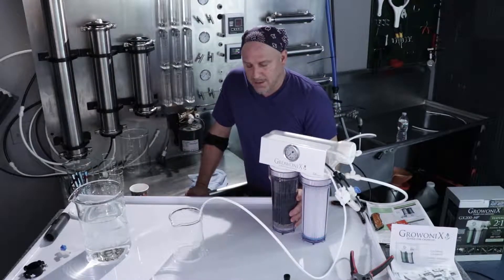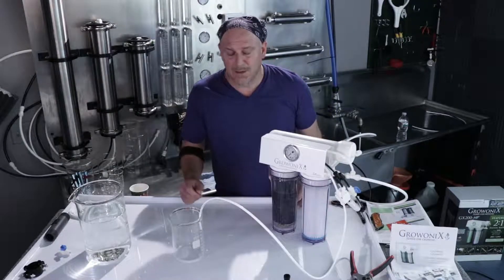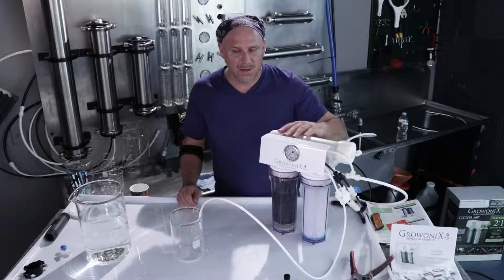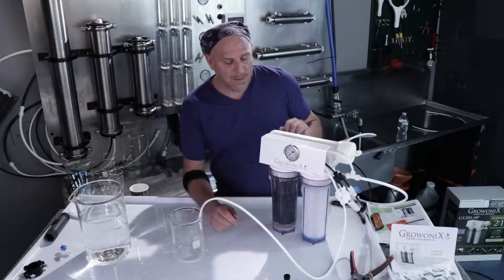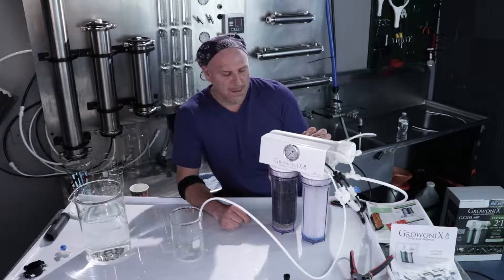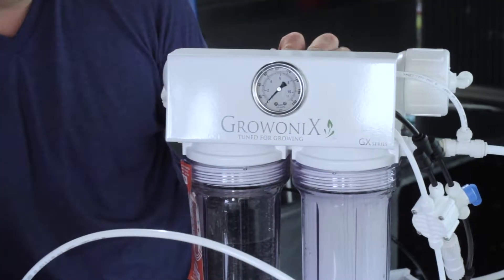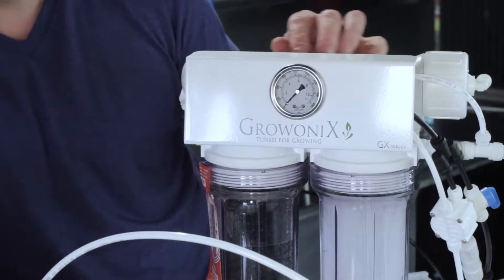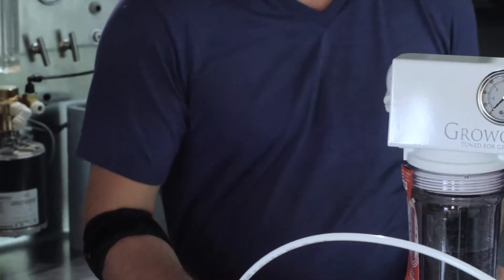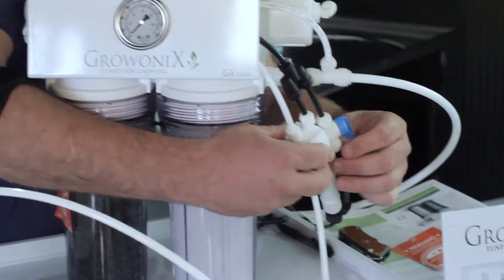Once again, when I turn the water pressure on, I'm going to turn it on very slowly. The membrane still has a lot of air in it. We want to purge all the air out of the membrane. The membrane also has some storage solution in it, usually a food grade glycerin-based storage solution, and we want to flush that out too before we use the product water.